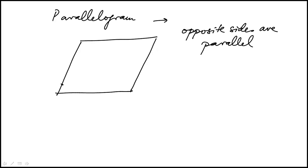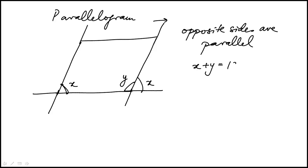If we call one angle x and the adjacent angle y, then because these two sides are parallel, this angle is equal to that one. We notice that x plus y equals 180. And if we draw the other parallel line, that angle is also x, which means the opposite angle is also x. So in a parallelogram, the opposite internal angles are equal.